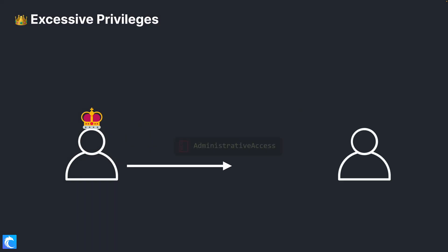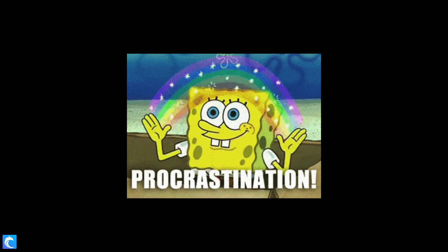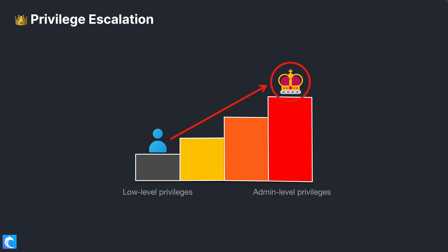You initially give them elevated privileges so they can get the job done, and then you tell yourself that you'll go back and refine them over time, but life and other work priorities get in the way and that never happens. So you're left with excessive privileges all over the place, which can lead to things like privilege escalation attacks.